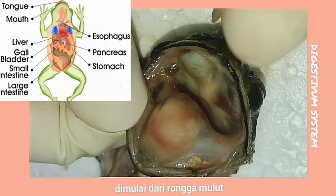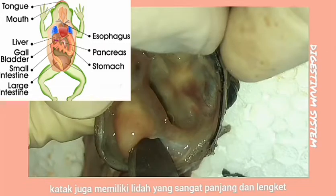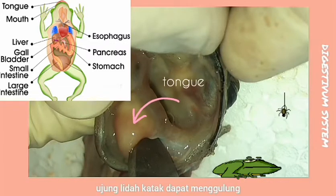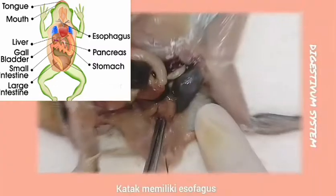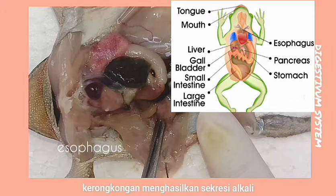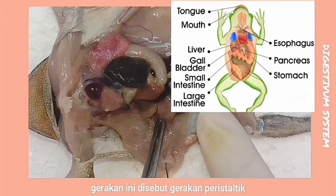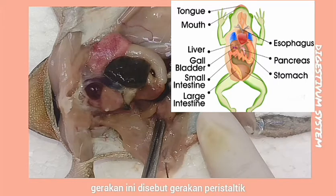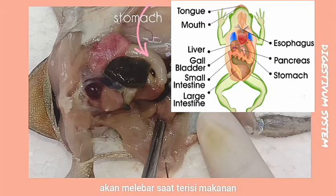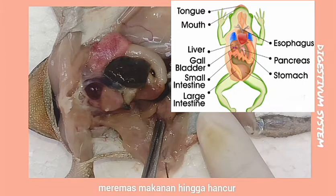The digestive system starts from the oral cavity. The mouth of the frog is supported by the upper and lower jaws. The frog also has a very long and sticky tongue; the tip of the frog's tongue can roll up to catch its prey. The frog has an esophagus that is a short tube producing alkaline secretion, and food passes into the stomach through movements called peristalsis.